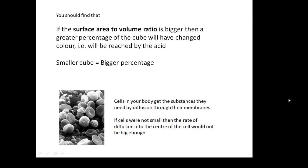In biology, this is important because substances diffuse into the cells in your body, particularly oxygen. This is why our body cells are small. If the cells weren't small, the rate of diffusion into the center of the cell wouldn't be high enough.